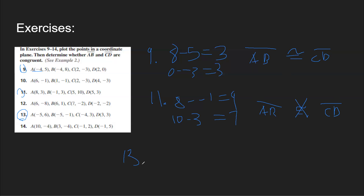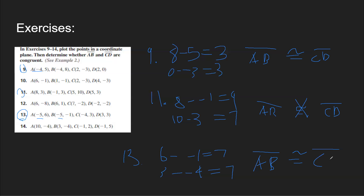Number 13. For points A and B, the x-values are the same, so find the difference between the y-values: 6 minus negative 1 equals 7. For points C and D, their y-values are the same, so find the difference between the x-values: 3 minus negative 4 equals 7. Since 7 equals 7, segment AB is congruent to segment CD.